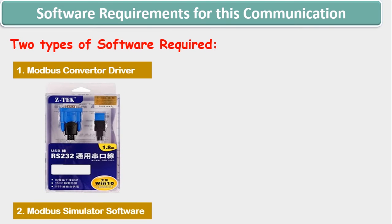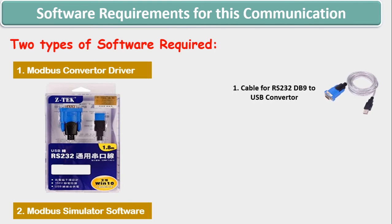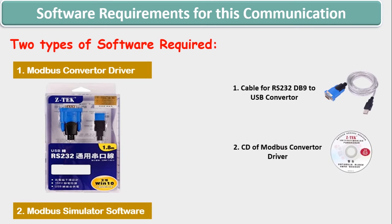Starting from the Modbus converter driver — mostly the hardware comes in the type of packing as you are seeing in this picture. It contains one cable of RS-232 DB9 to USB converter which is inserted in our system. Along with the cable it also contains a CD or DVD which contains the driver of the hardware. Once the driver is installed, you can access the hardware via COM port or USB port. If you don't find a CD or DVD, you can also download this driver online via the internet.